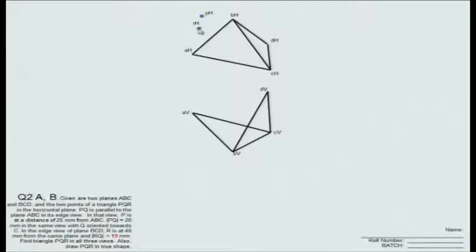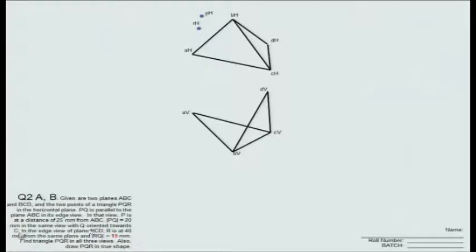Point P is here, point R is here in the horizontal plane. PQ is parallel to the plane ABC in its edge view. In that view, P is at a distance of 25 millimeters from ABC. The distance PQ is 20 millimeters in the same view, with Q oriented towards C. Point Q is such that it is oriented towards C in the edge view of plane ABC. In the edge view of plane BCD, point R is at 40 millimeters from the same plane and the distance RQ is 15 millimeters. The question is to find triangle PQR in all three views and also in true shape.